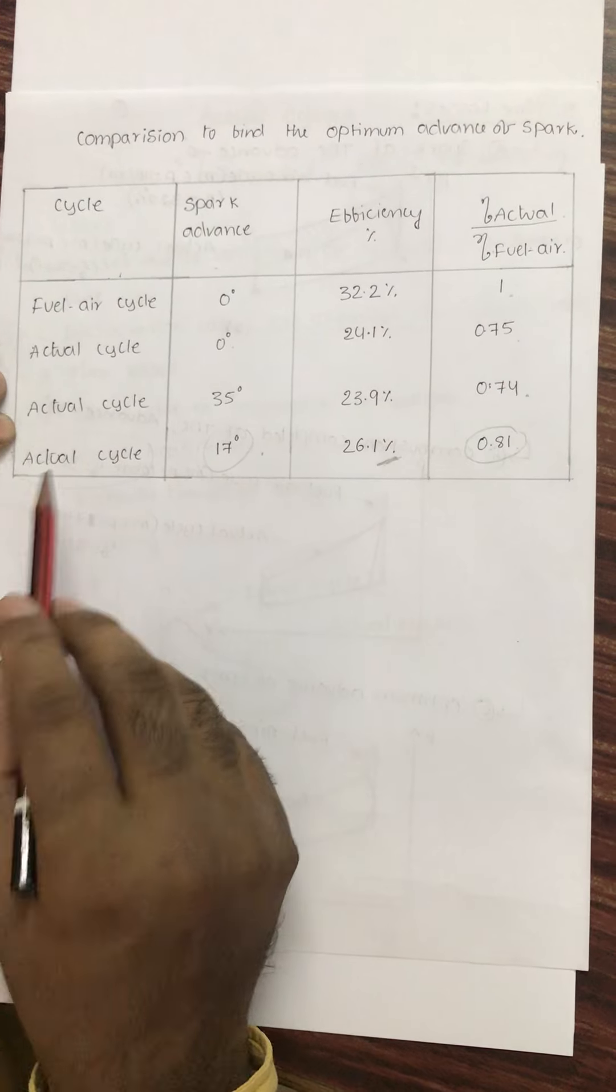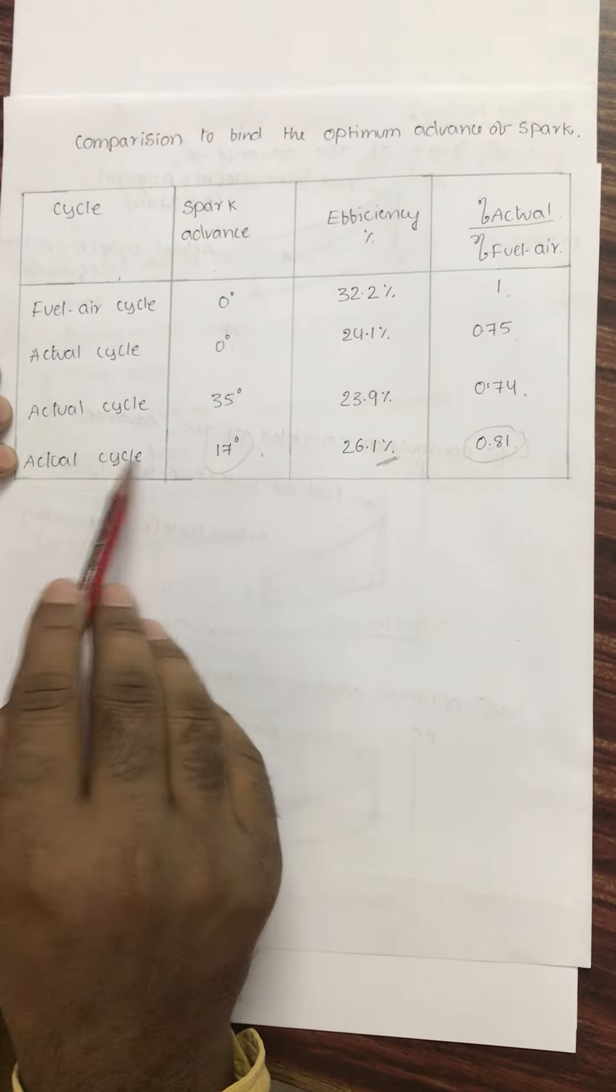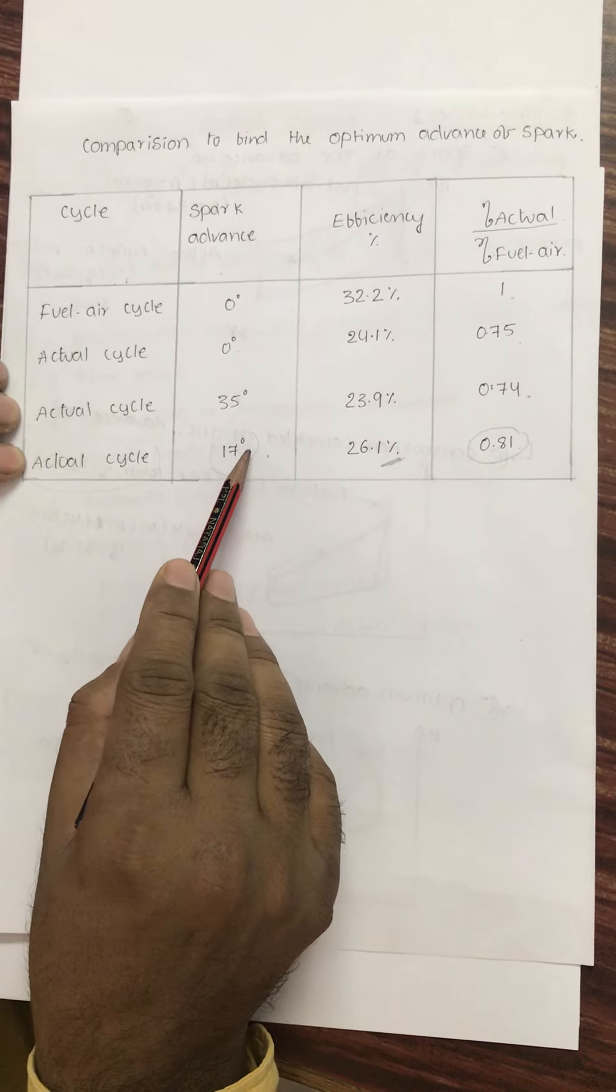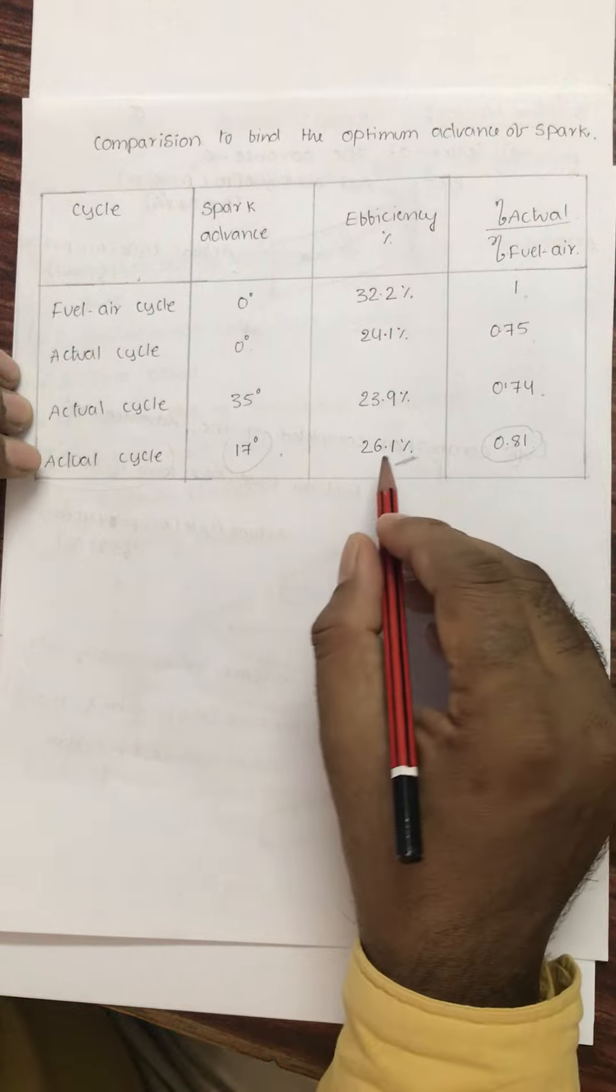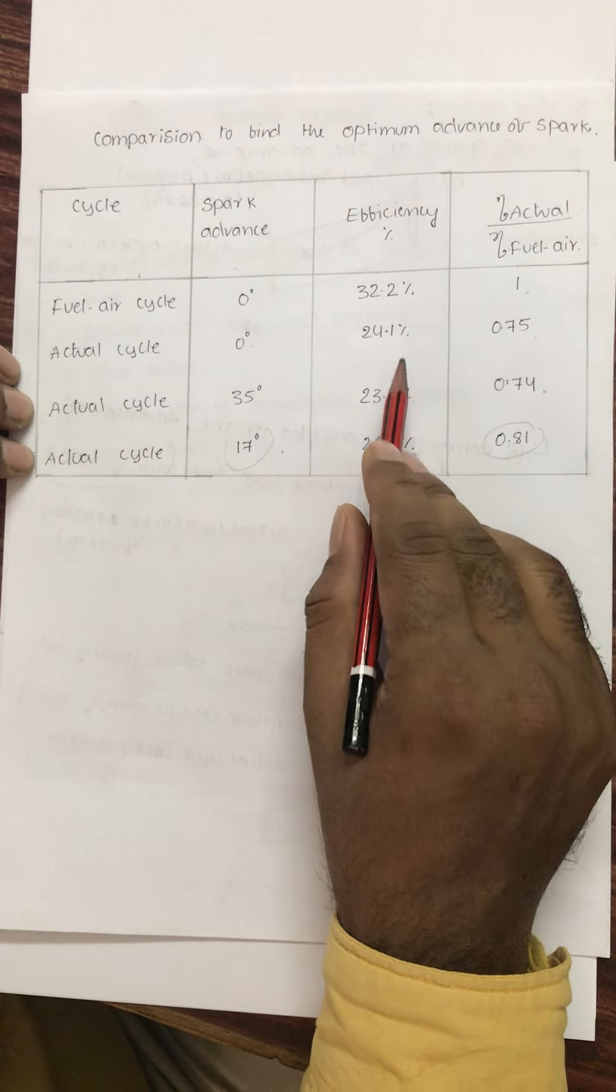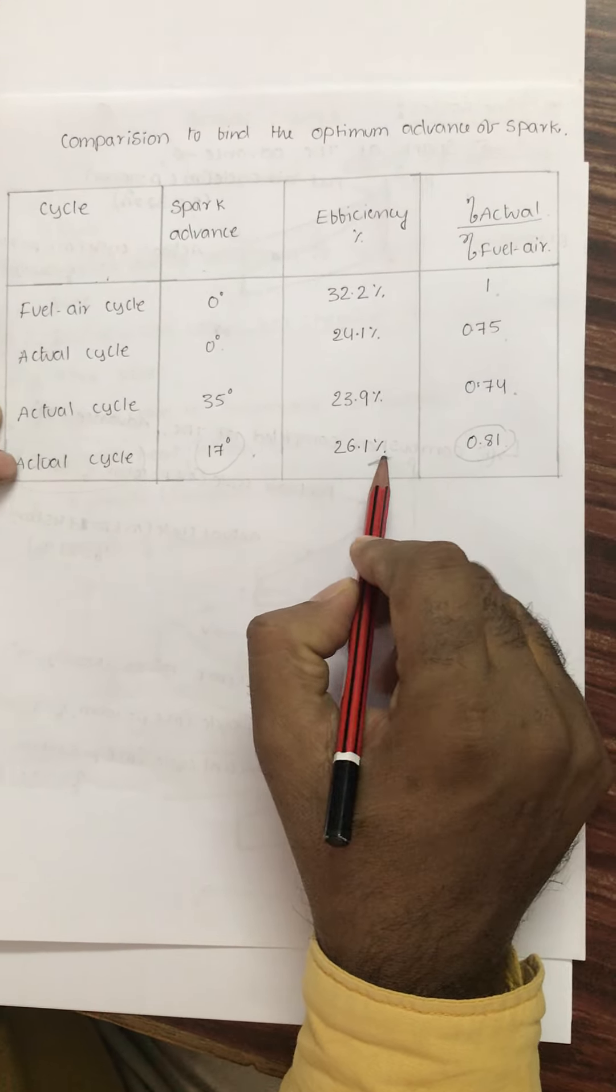And this is the optimum value - actual cycle with 17 degrees of crank, 17 degrees of spark before TDC. So I will get 26.1%, and out of these three, this is the maximum efficiency.